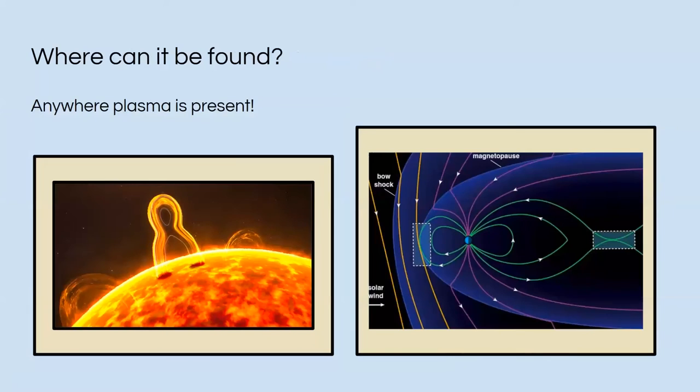All right, so where can it be found? Here are just two examples. To the left, we have solar flares where you can see magnetic reconnection occurring. And to the right, you can see both where the solar wind hits Earth's magnetosphere and where the magnetic field lines reconnect at the end.